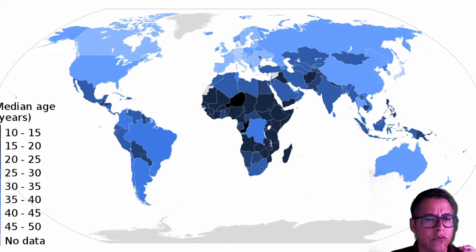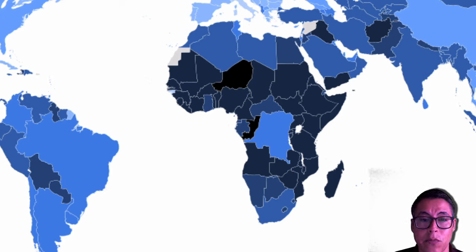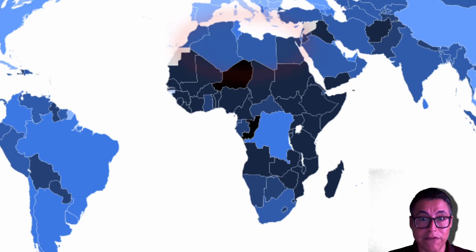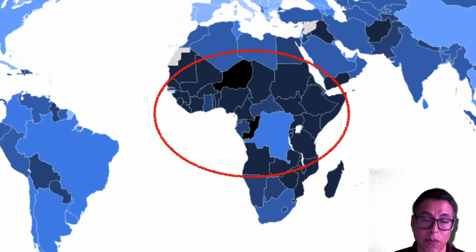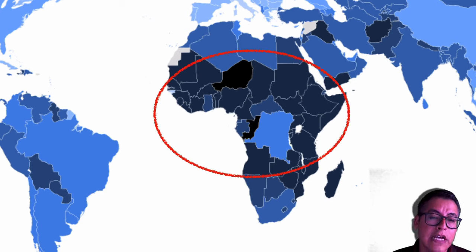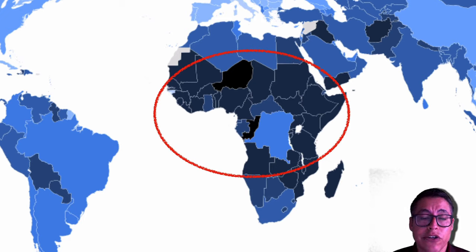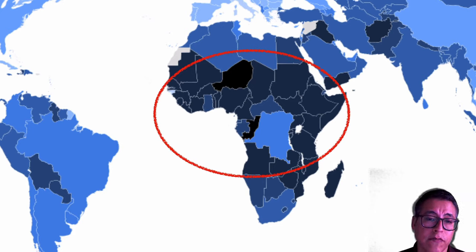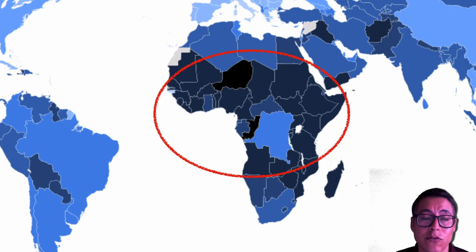But if we zoom in and look at the regional scale, we see a different story. For example, the northern part of Africa has an older population, while the part of Africa south of the Sahara Desert has a younger population. One way we can explain this difference is the level of economic development. The more economically developed a country is, the older its population in general. And the younger a population is, that country is probably not as economically developed.